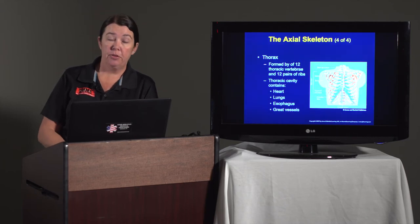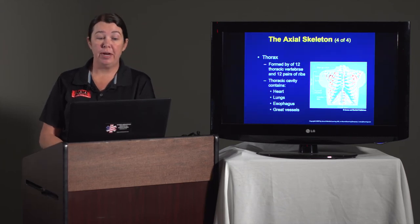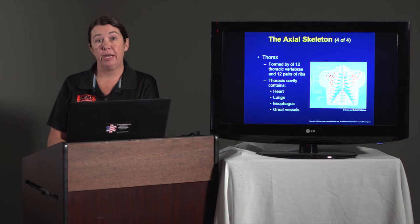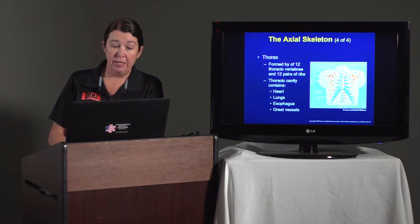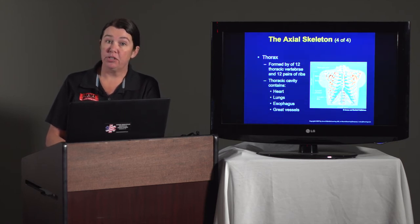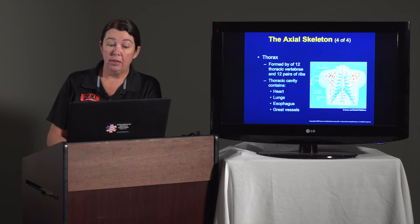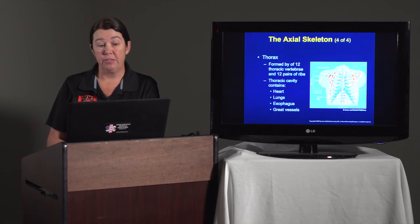The thorax is formed by 12 thoracic vertebrae and 12 paired ribs. The thoracic cavity contains the heart, the lungs, the esophagus, and the great vessel.